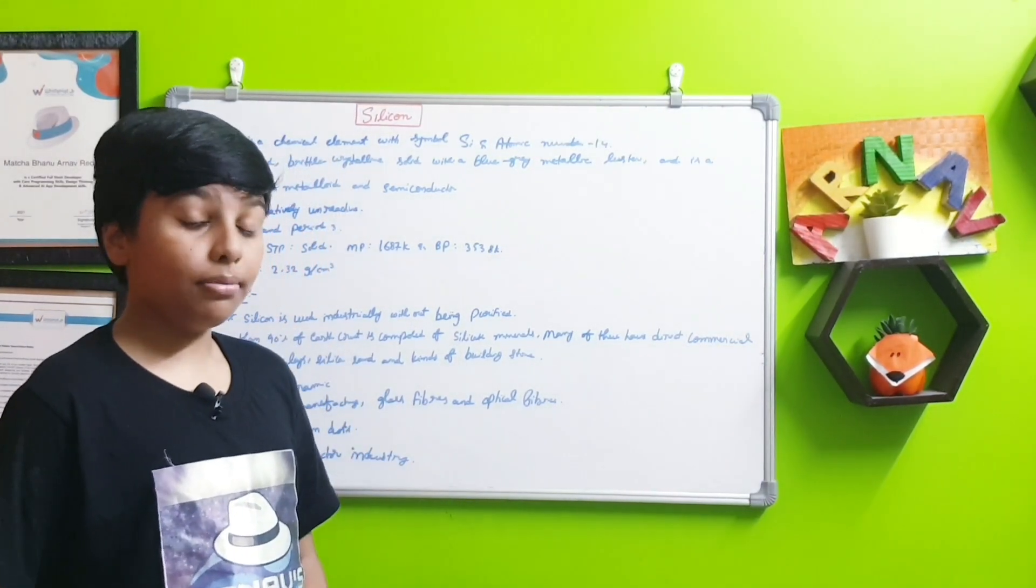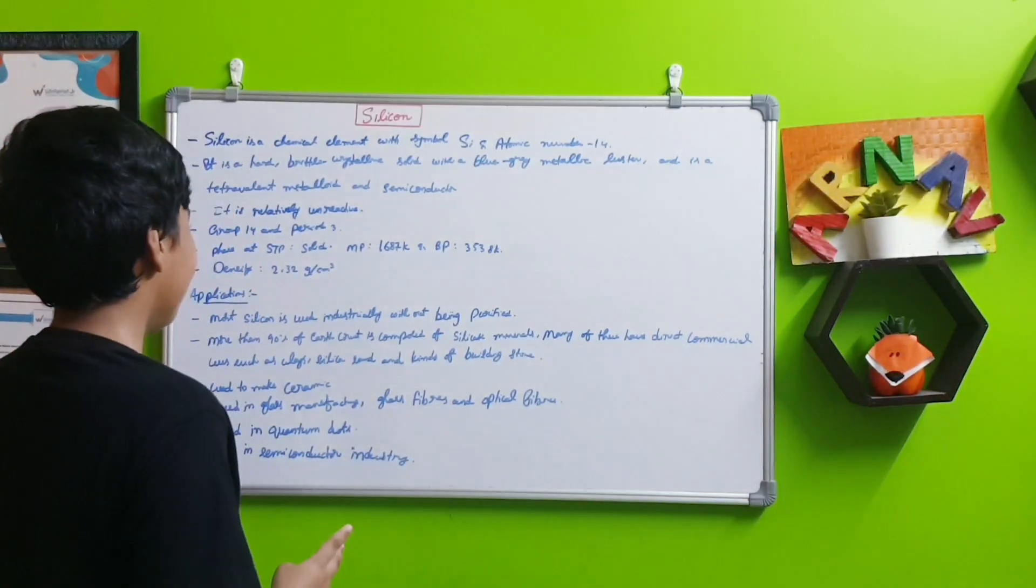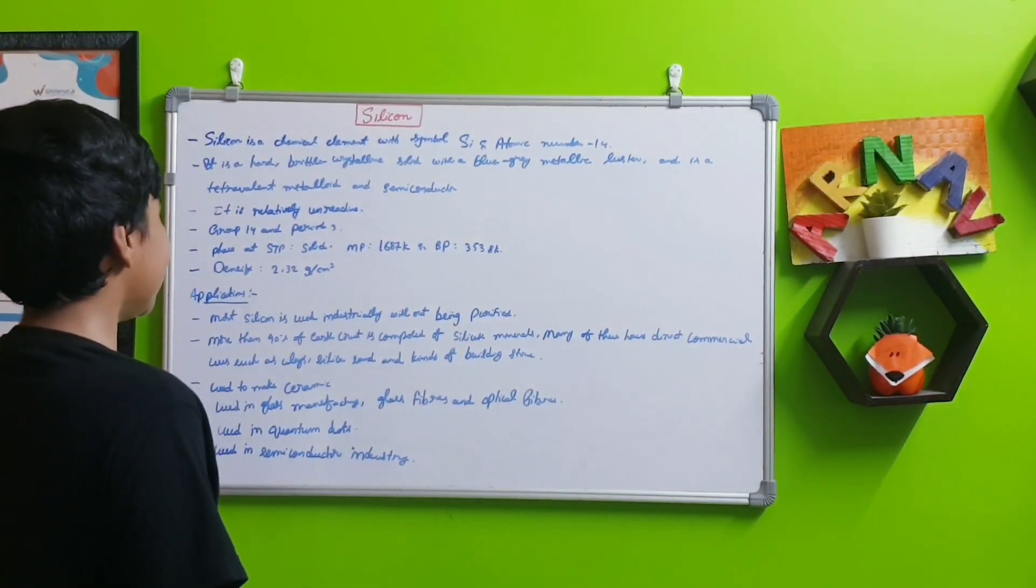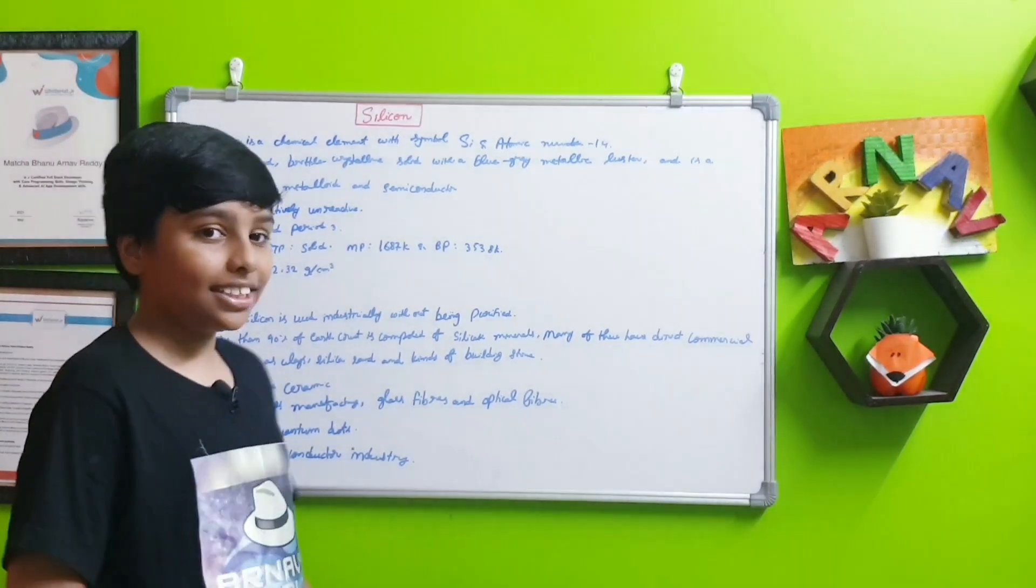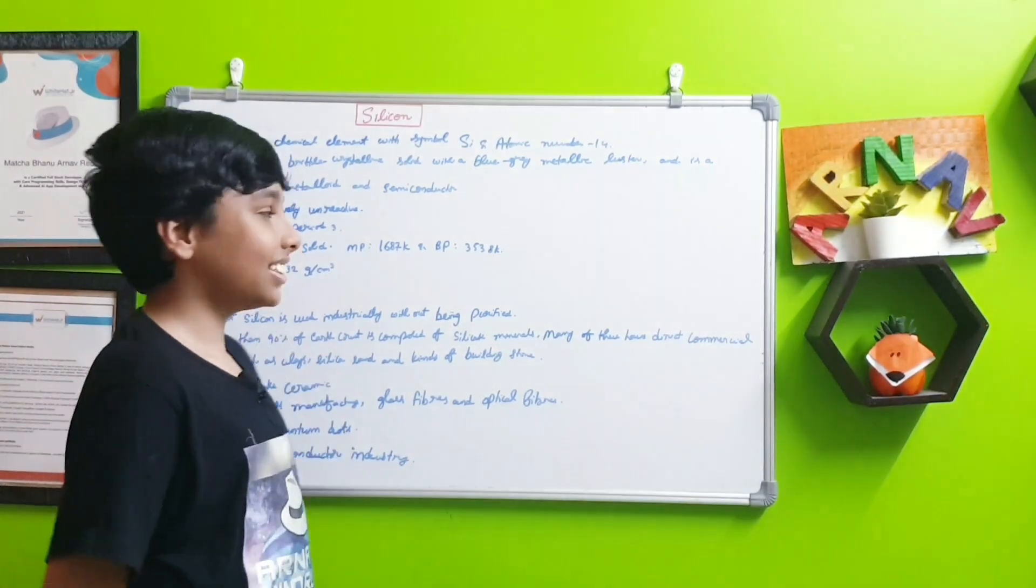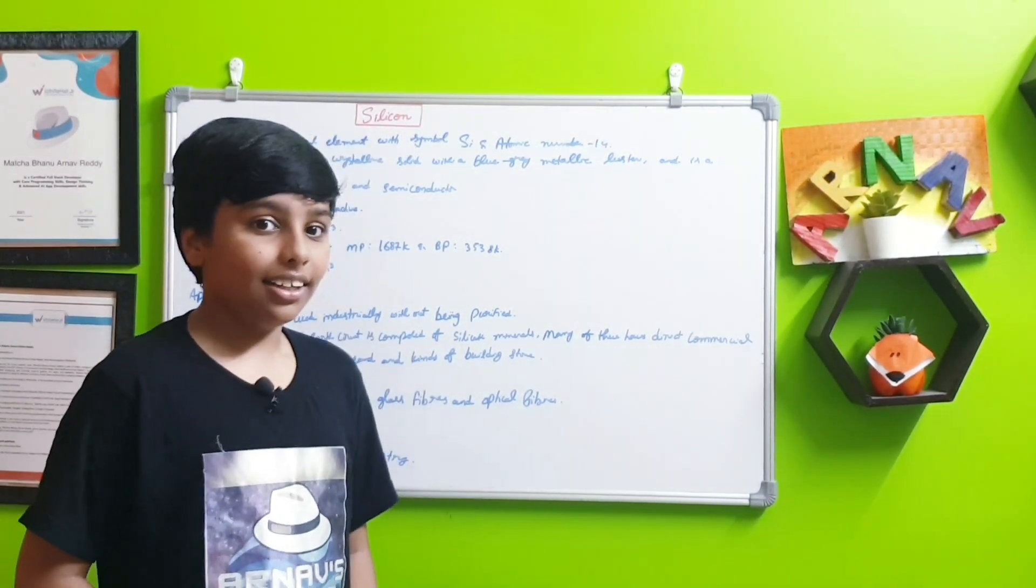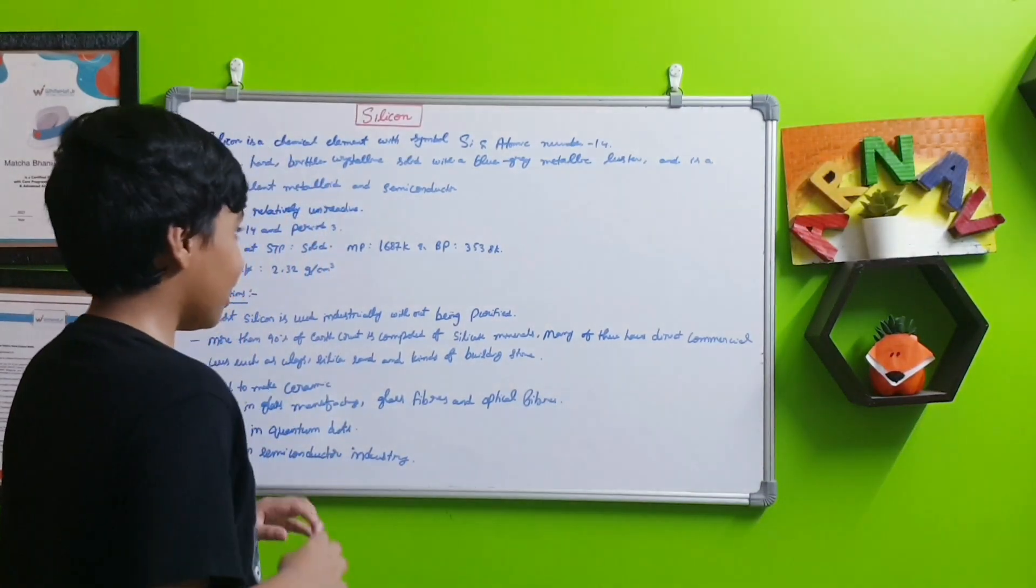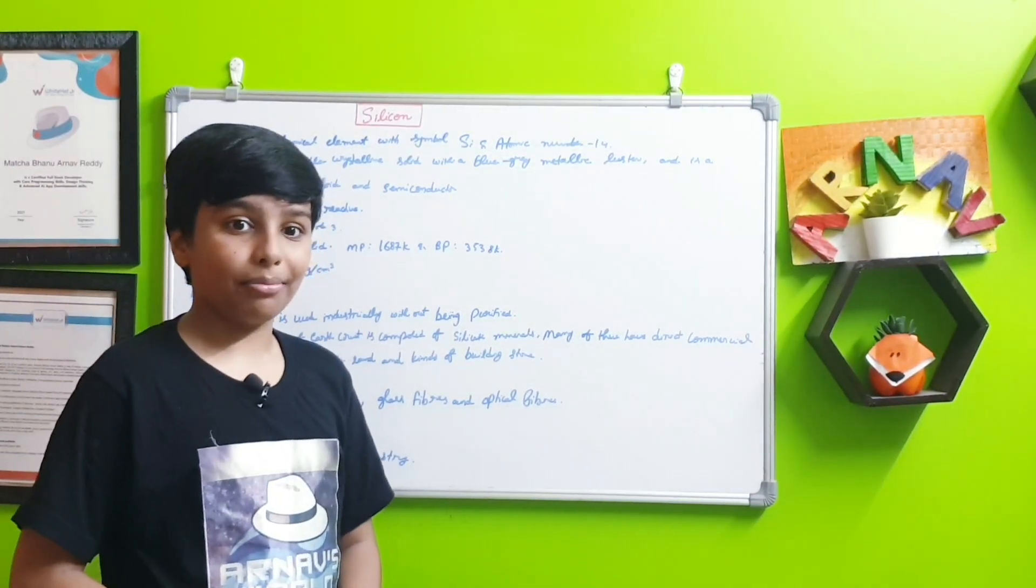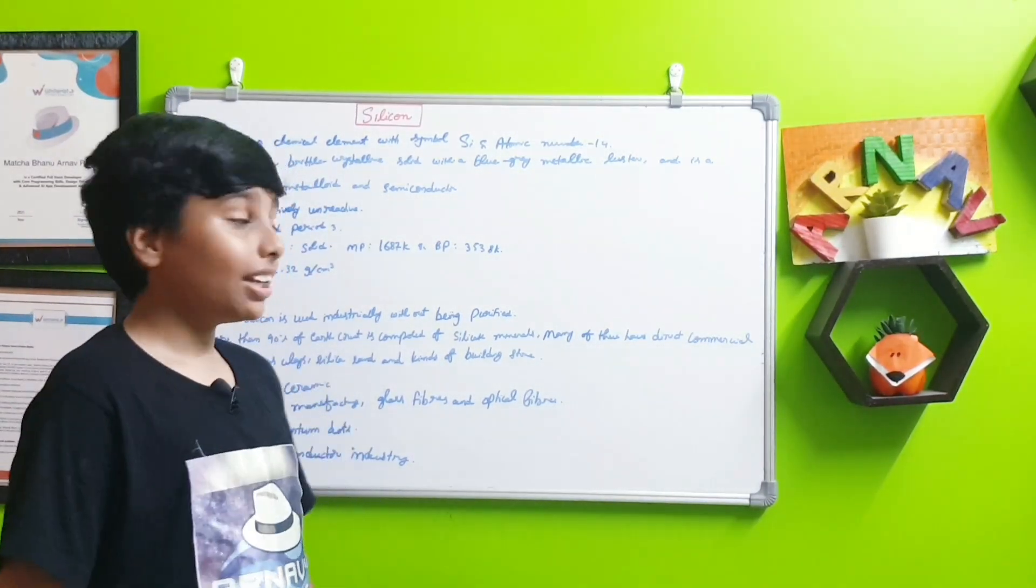That means it's in the 14th group and 3rd row. Its phase at standard temperature and pressure is solid. Its melting point is 1687 Kelvin. Like other metals, its melting point is very high.